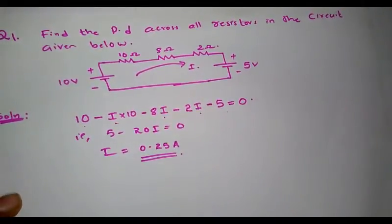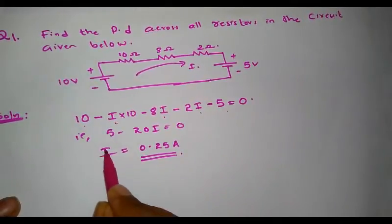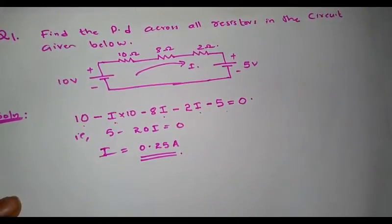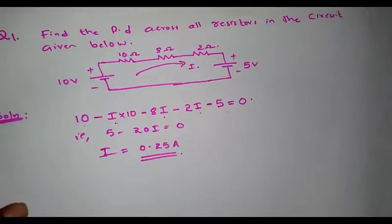The current 0.25 amperes is flowing through the circuit. Since the value is positive, my assumption is correct and the current is indeed flowing in the clockwise direction. The net direction of flow of current is clockwise, and it is 0.25 amperes.